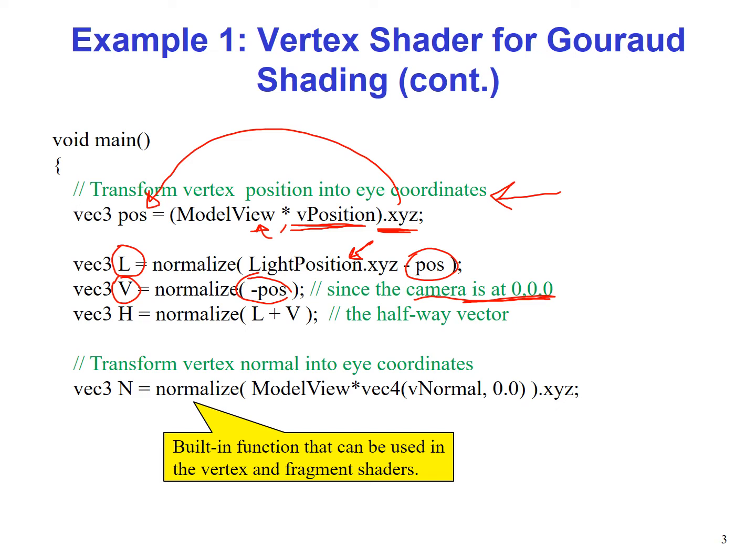And then we calculate the halfway vector, which is L plus V, and we normalize all these vectors so that we ensure that all these vectors are unit vectors, which we require for our calculation. We also calculate the normals of all the vertices.